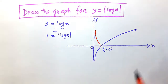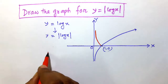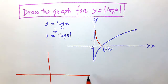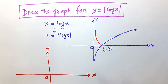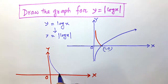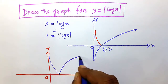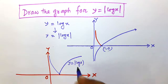The mirror image of the negative part is reflected like this. So ultimately you get the curve of y is equal to modulus of log x. The curve passes through the point one comma zero.